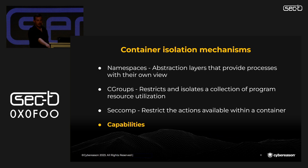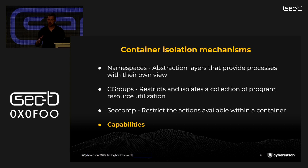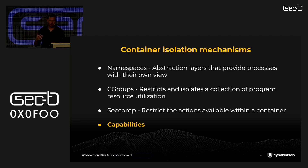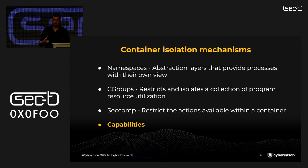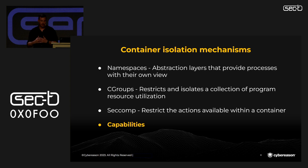Let me introduce some of these isolation mechanisms. First, we have namespaces — abstraction layers that provide processes with their own view of the system and its resources, limiting what a process can see and use. Next, we have control groups, aka cgroups — a Linux kernel feature that restricts and isolates a collection of program resource utilization such as CPU, memory, and network. Then we have seccomp, which stands for secure computing mode — this kernel feature allows us to restrict actions available within a container down to the granularity of a single system call.